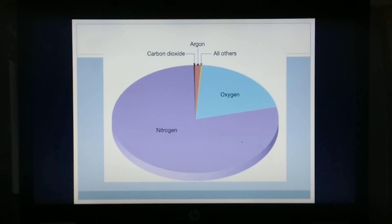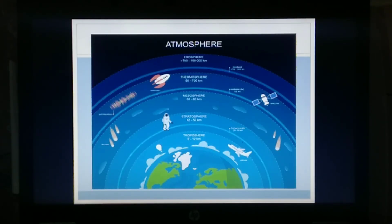The atmosphere of Earth protects life by creating pressure, allowing for liquid water to exist on Earth's surface, absorbing ultraviolet solar radiation, warming the surface through heat retention or greenhouse effect, and reducing temperature extremes between day and night.